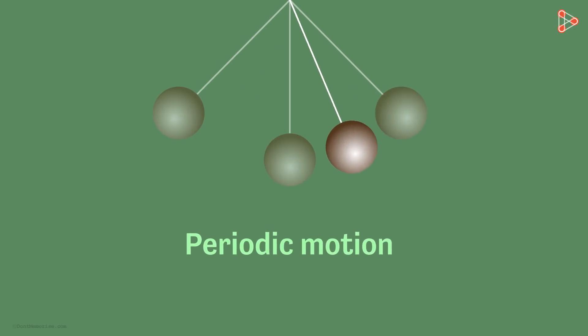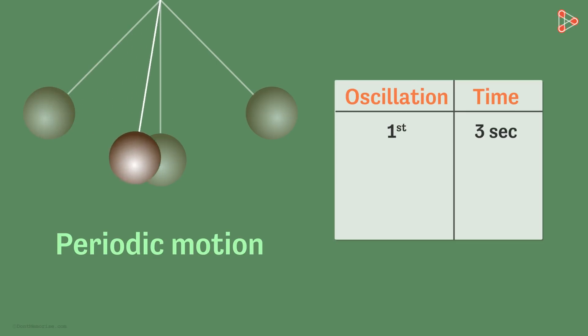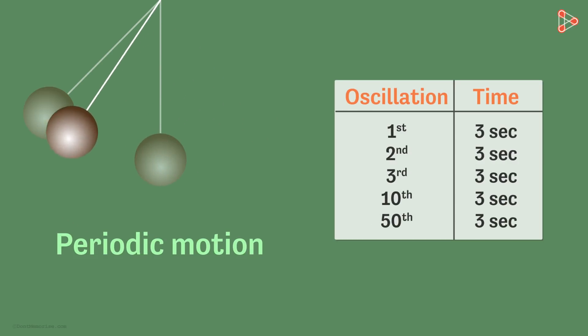It means that if a bob takes three seconds to complete the first cycle, then it will take three seconds to complete the second, the third, the tenth or the fiftieth cycle as well.